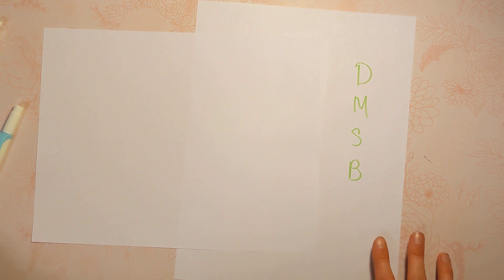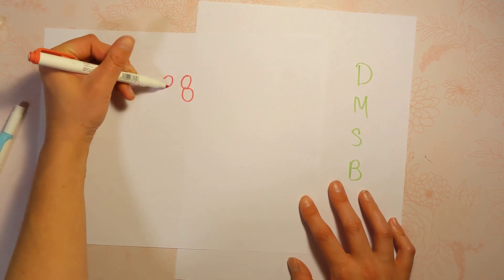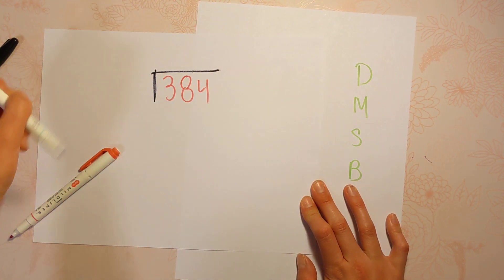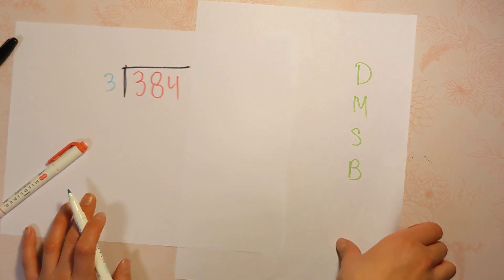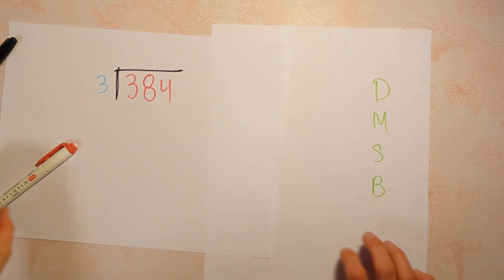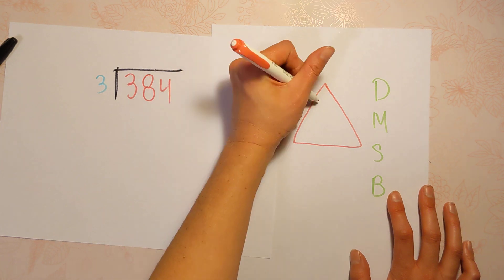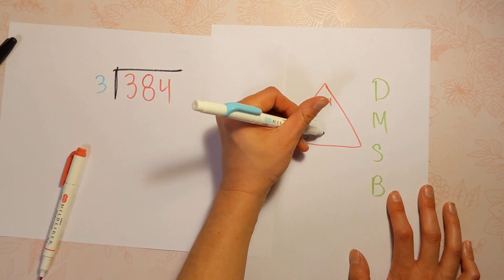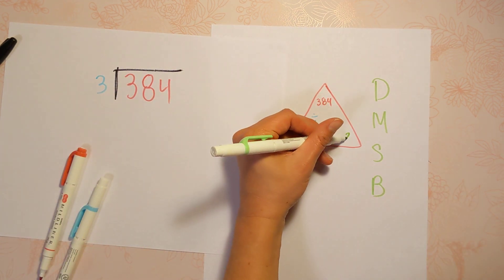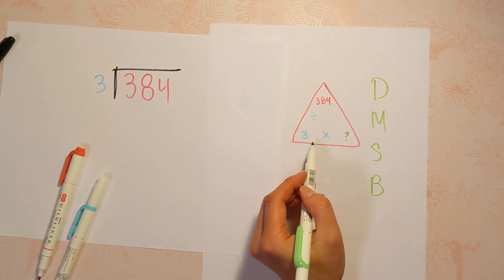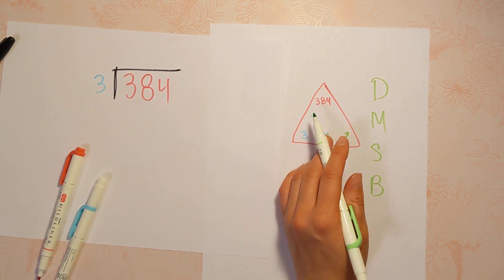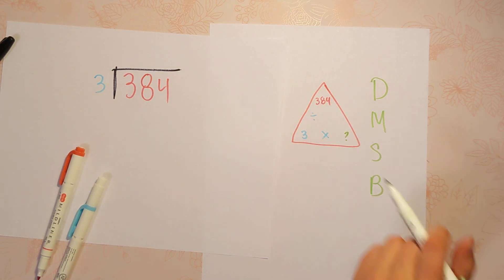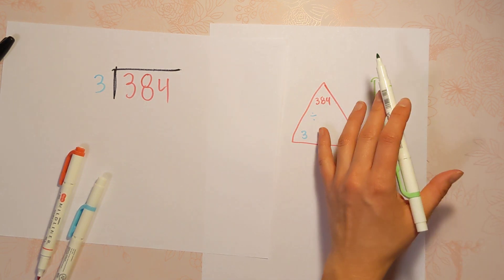We're going to do 384 divided by 3. And I always draw a fact triangle, so I want you to do that too. It helps me conceptualize the relationship between multiplication and division. If we're saying 384 divided by 3 equals something, then we're also saying 3 times something equals 384. So you could skip count your 3's until you get to 384 — it would take a long time, but you could do it, or get close. Sometimes we get close and there's a remainder.